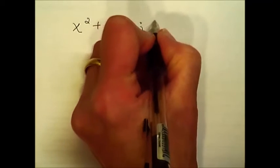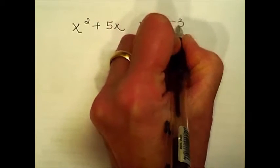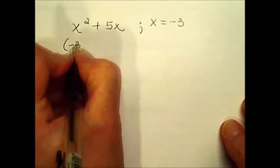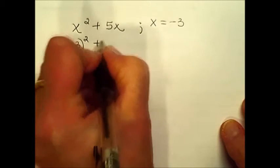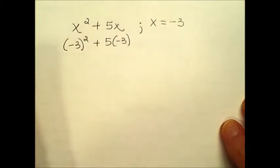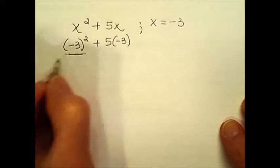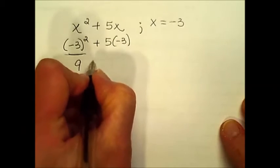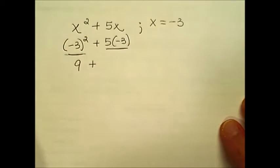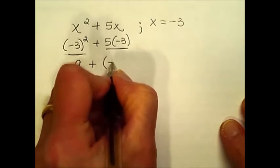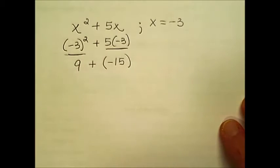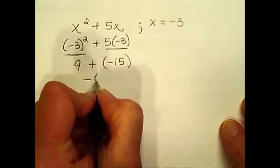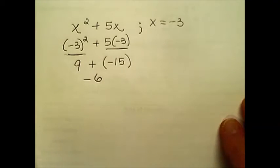So now, if they ask us to simplify this, following the order of operations, and they give us that x is equal to a negative 3, we will replace the variable with that given value, and then follow the game plan that we just devised. Powers first, negative 3 times negative 3, a negative times a negative is a positive. Skip the addition, we'll multiply, a positive times a negative is a negative, 5 times 3 is 15. And then we're going to add, the larger one is negative, and the difference is 6.